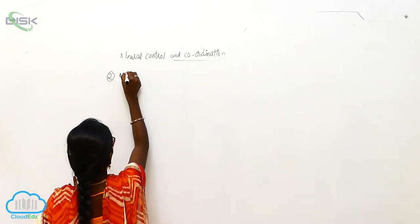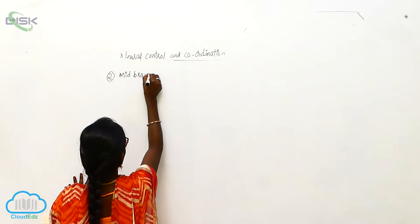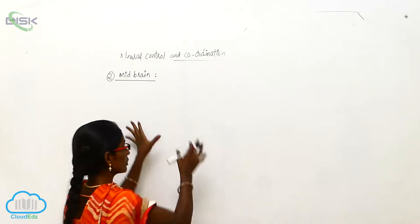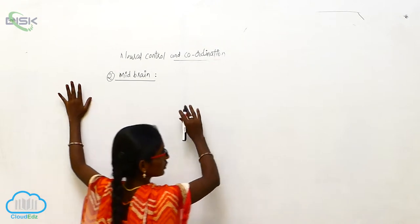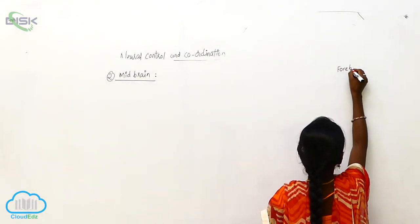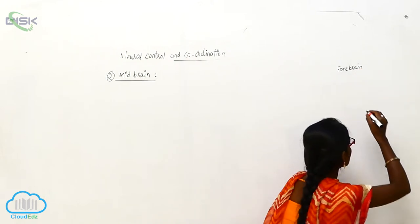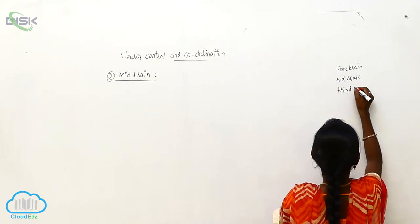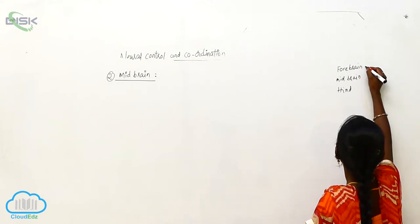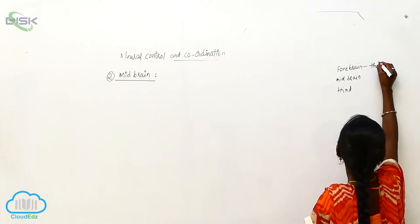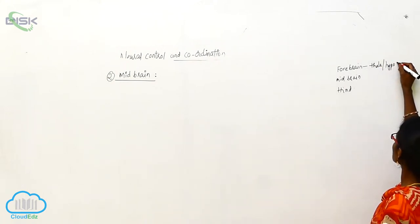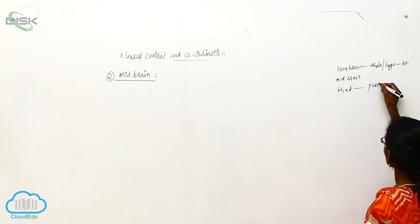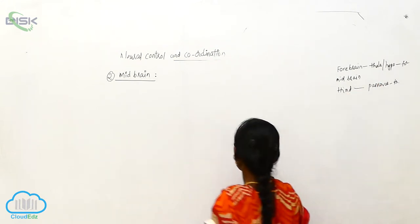The second part is the midbrain. The midbrain is present between the forebrain and the hindbrain — specifically between the thalamus and hypothalamus of the forebrain and the pons varoli of the hindbrain.